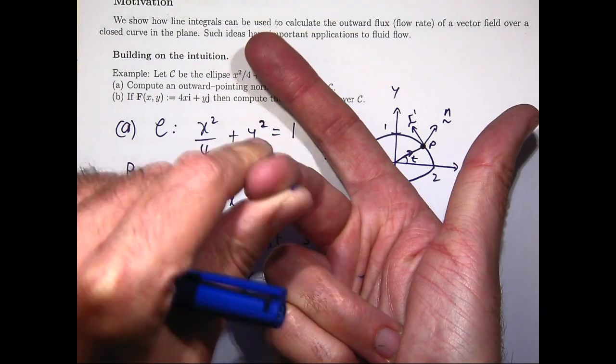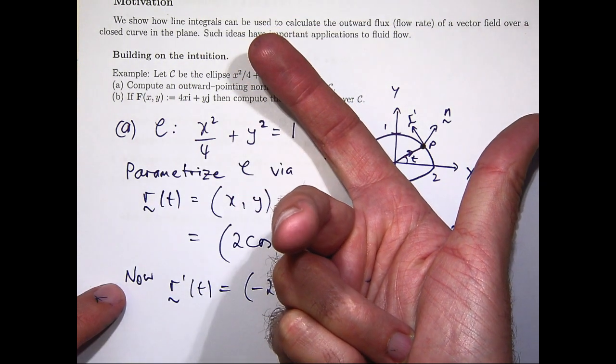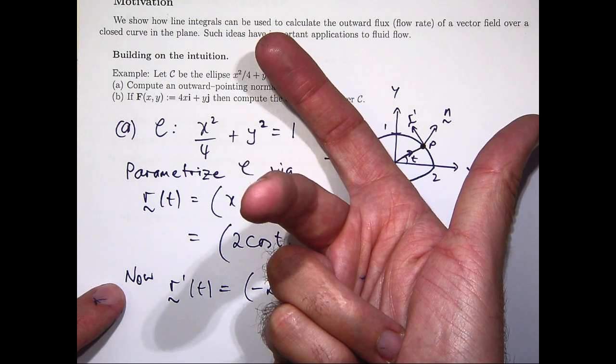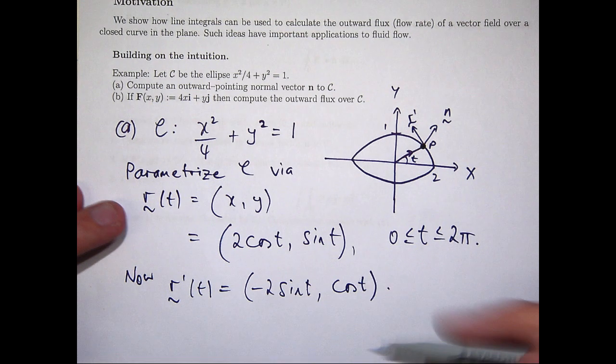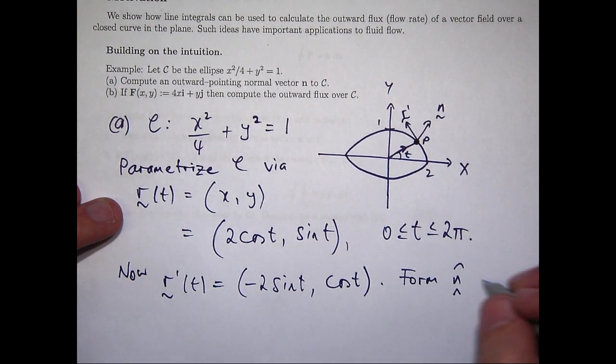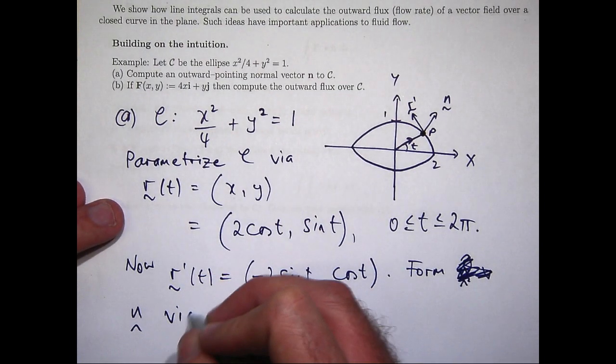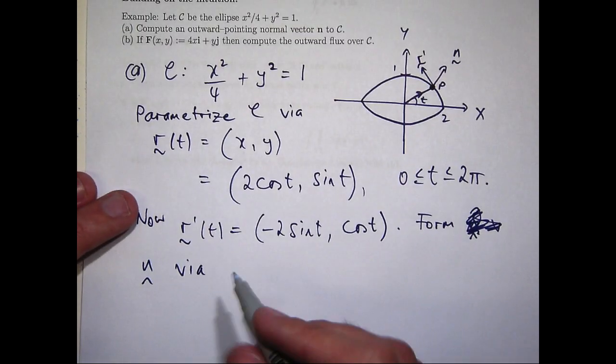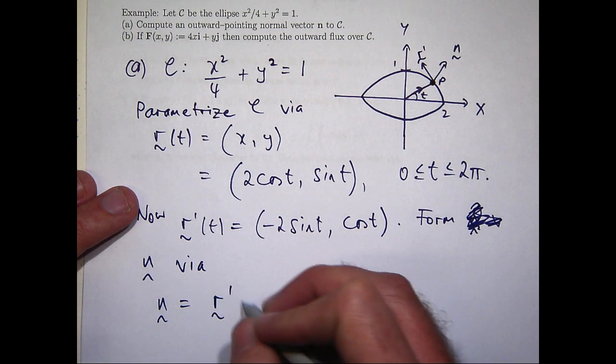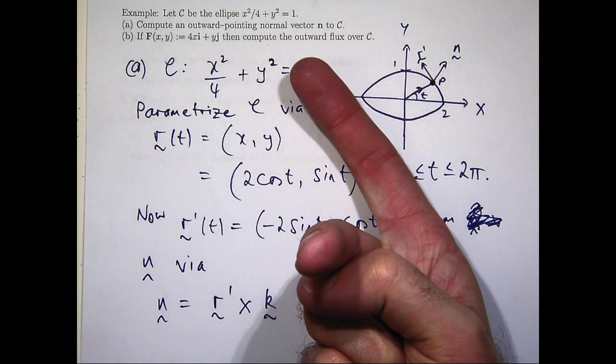Now look at the direction of my thumb. It is in the same direction as the normal vector. So what can we choose this vector to be? Well, the simplest vector that is pointing upward from the xy plane, the k vector, the vector 001. So let's form n via the following cross product.